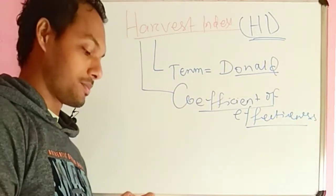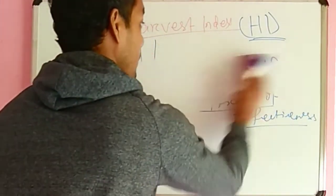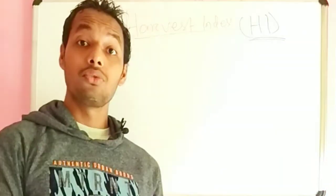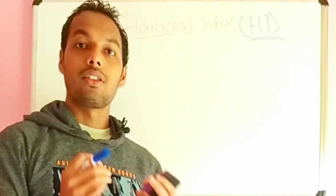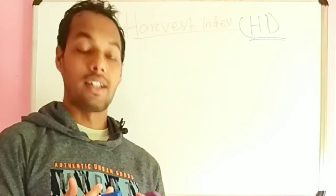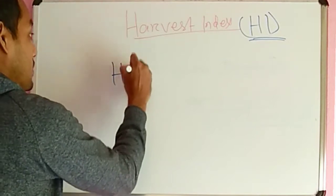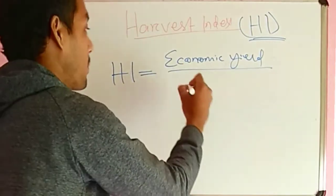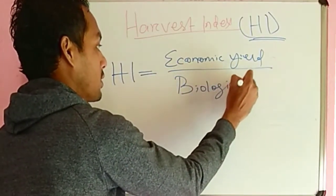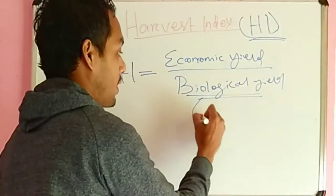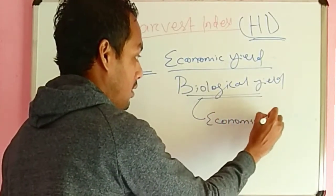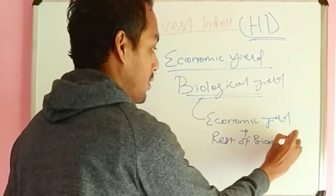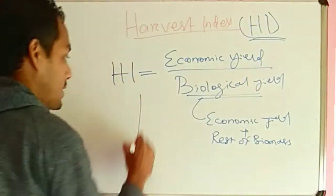So what is harvest index? Harvest index is basically the economic part — the usable part — from the biomass we get from a crop. The economic part, what we can consume or sell, that is the harvest index. It is denoted as: HI = economic yield divided by biological yield, where biological yield consists of economic yield plus the rest of the biomass, that is non-economic yield.